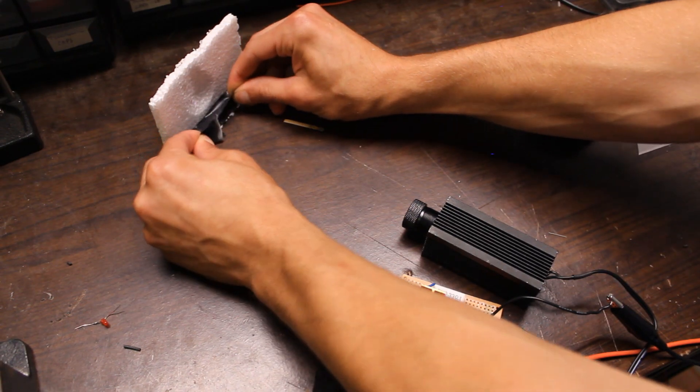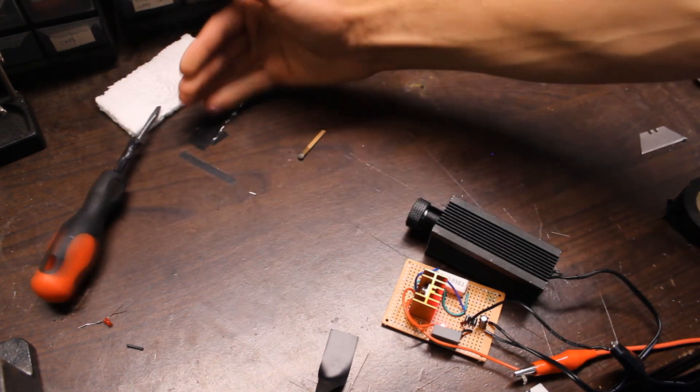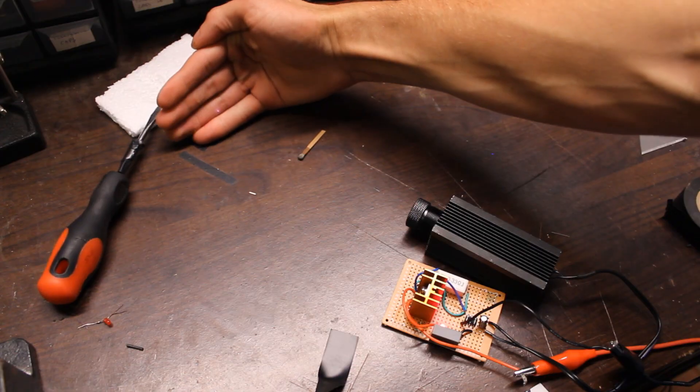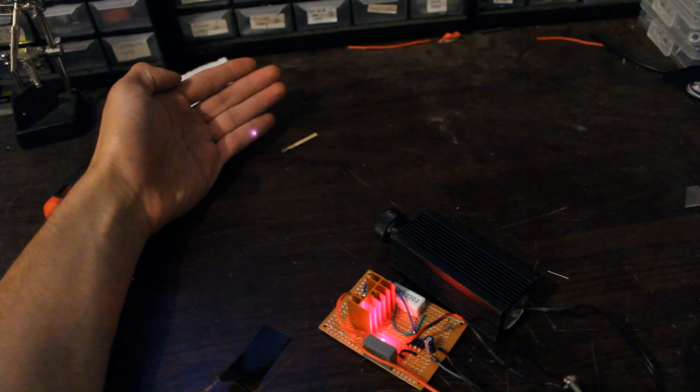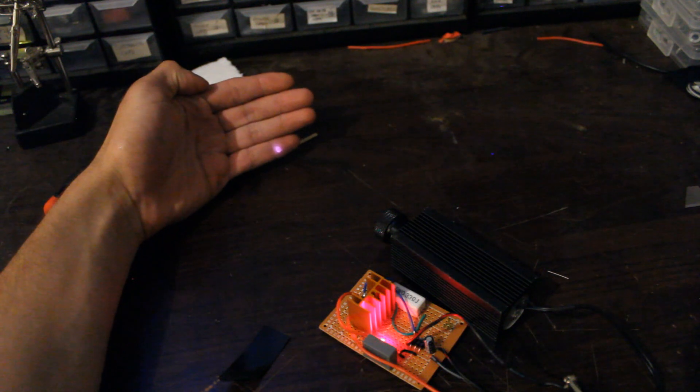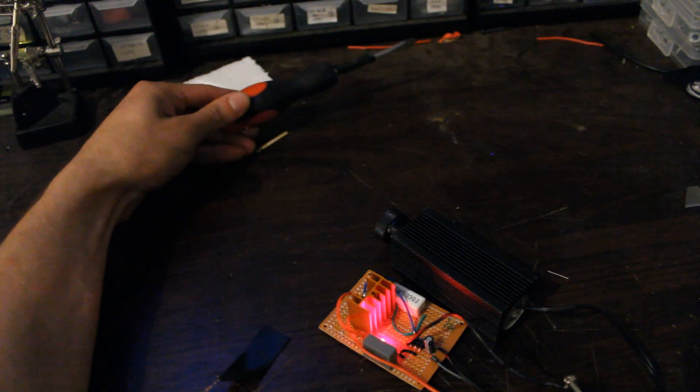and it can even make plastic smoke. So what happens when I stick my hand in the beam? I actually don't feel anything at all. My flesh is essentially transparent at this wavelength. I could stick my hand in the beam all day, and I'm not going to feel anything. The light just disperses through, barely absorbing at all. So clearly this wavelength would not make a good laser weapon.